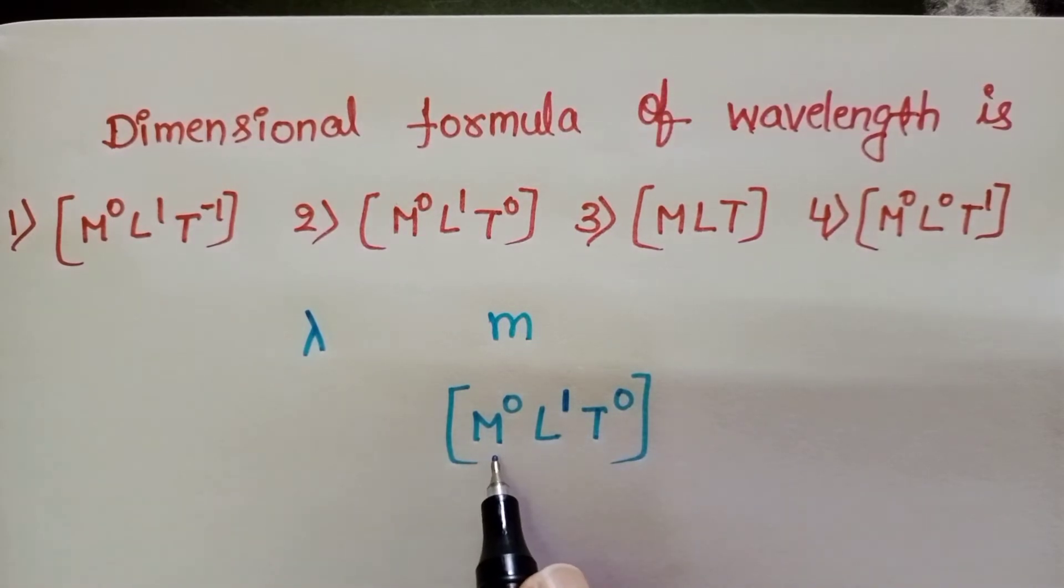So, the dimensional formula of wavelength is M power 0 L power 1 T power 0.